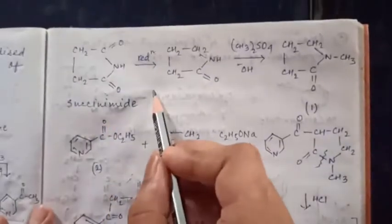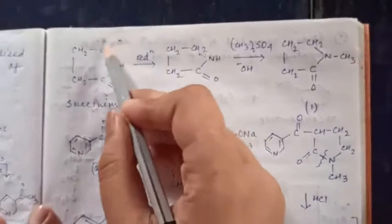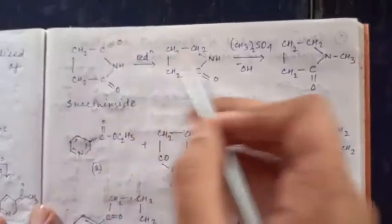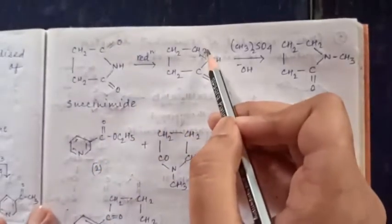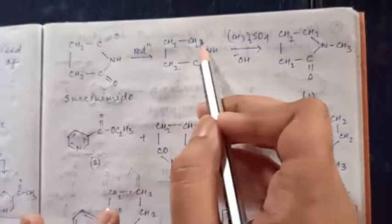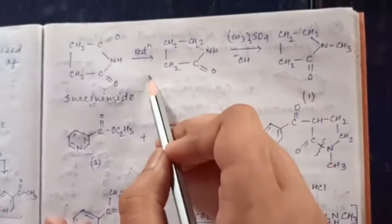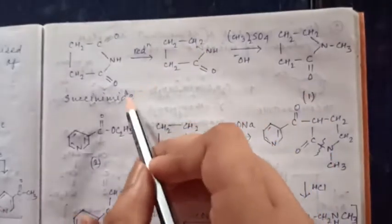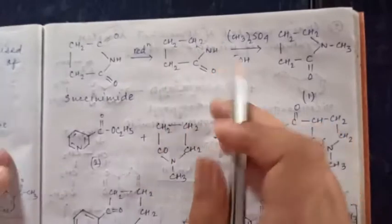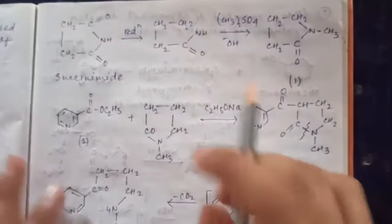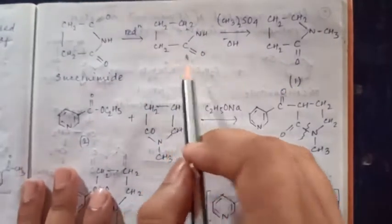In the first synthesis, succinamide is taken and it is reduced. After reduction, the C=O part converts into a CH2 part. This is a partial reduction, and after the formation of this compound it is treated with the next reagent.